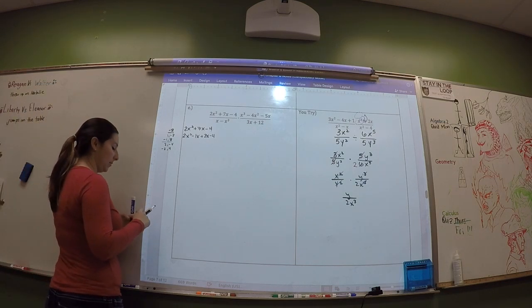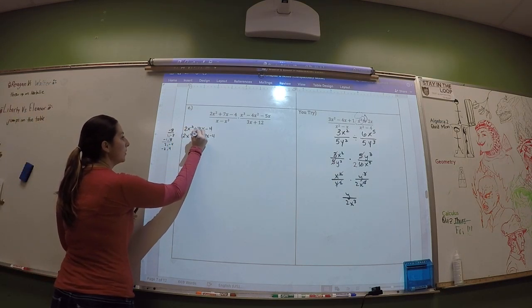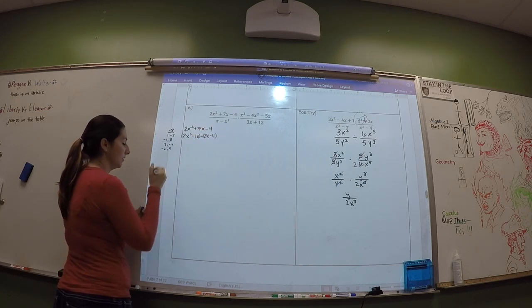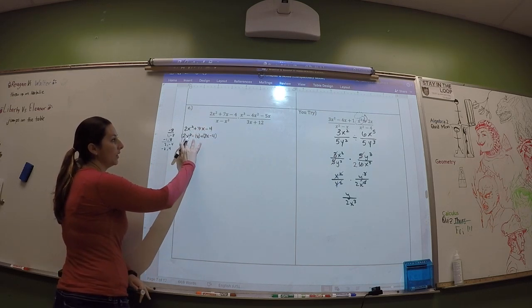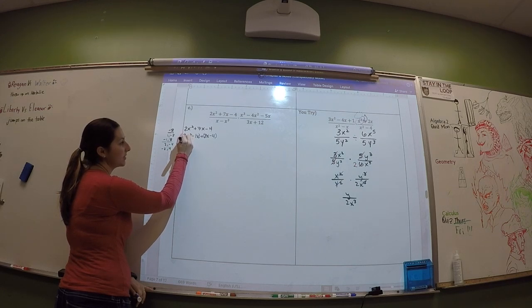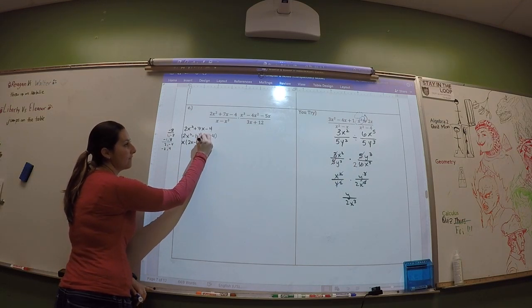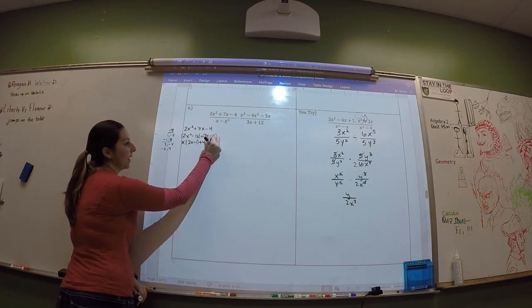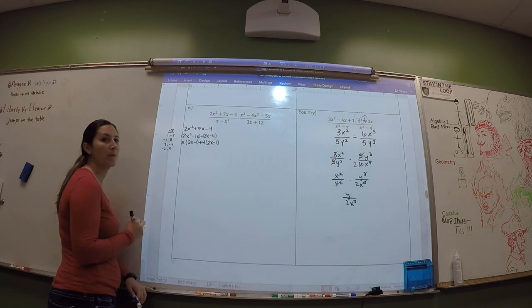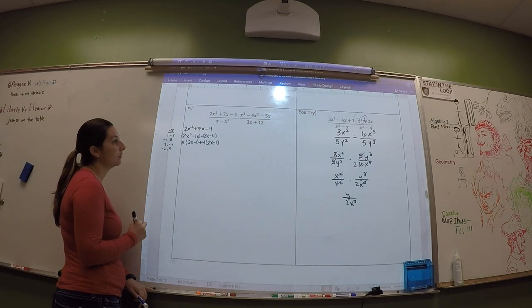And then I'm going to look at this as two groups. So here I can factor out an x, and I get 2x - 1. Wow, interesting. Here I can factor out a 4, and I get 2x - 1. See, I just got x plus 8x minus 1. Is that wrong?